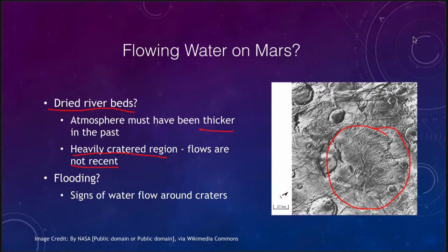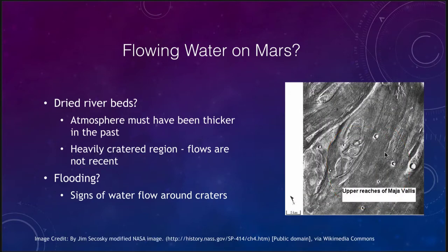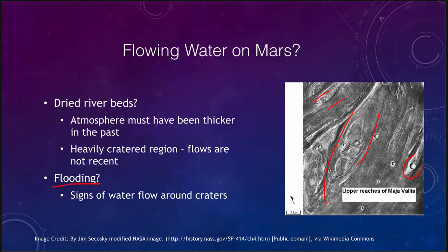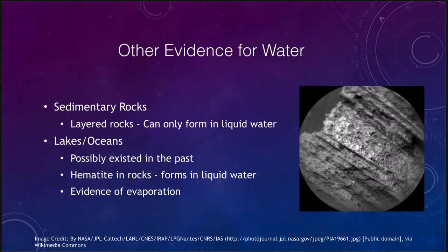We also see evidence of flooding. There are areas where you can see where something has flowed in the past, with channels made around various higher-level objects. For example, a crater where material has been eroded around it, but the crater itself protected its materials. It looks a lot like flash floods you would get on Earth. We know it is not brand new, though it may be more recent than other images, because we still see a number of craters present.